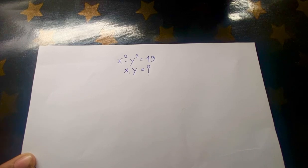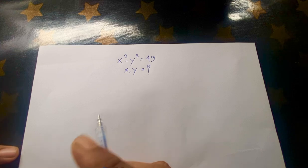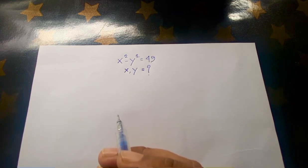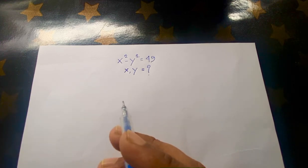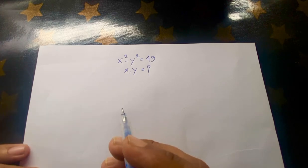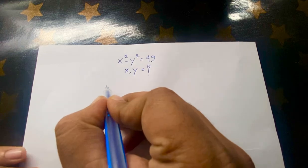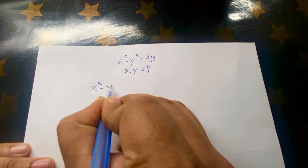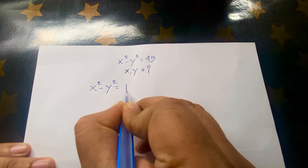Hello everyone. In this video we will solve this interesting math question. The question is: x squared minus y squared is equal to 49, and we'll find out the values of x and y, where x and y are positive integers.